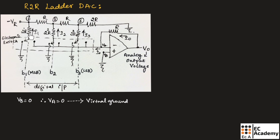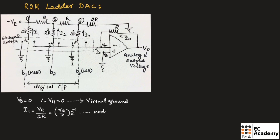At node 1, we can write the current I1 as VR divided by 2R. In the same way, at node 2, we can write current I2 is equal to VR divided by 2² × R. We can write I1 as VR divided by R multiplied with 2 to the power of minus 1. This is at node 1.